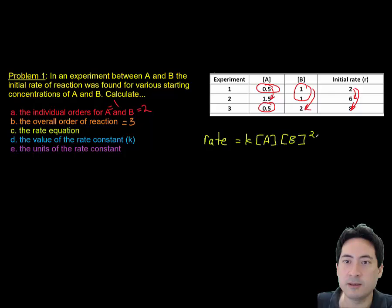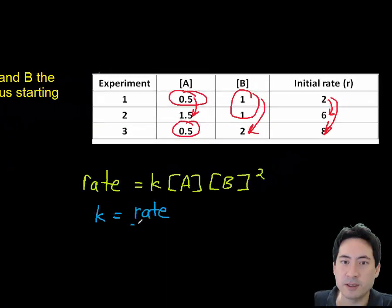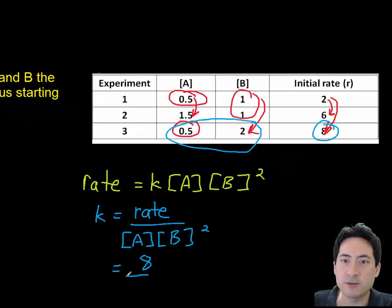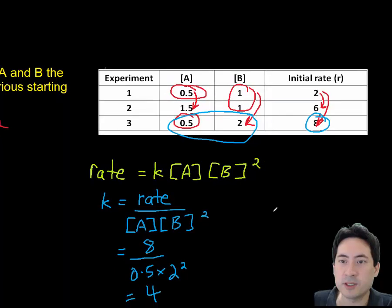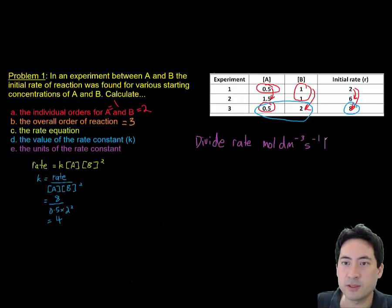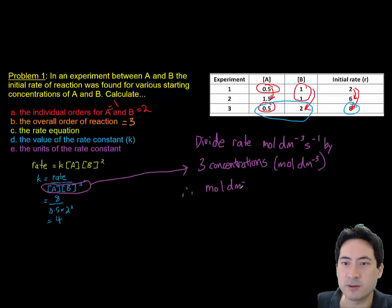And so that's k, concentration of A, concentration of B squared. And we can now sub in values for that. And that gives us the k, the rate constant is four. Now because we have three concentrations there, we need to divide the rate constant by three concentrations. And that will give us the units for the rate constant.